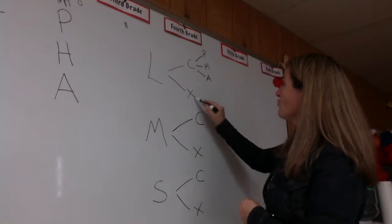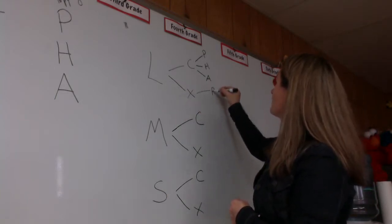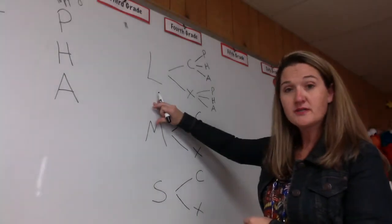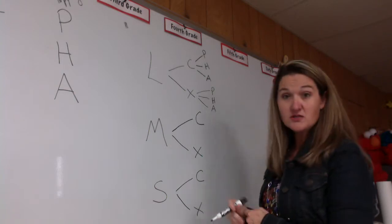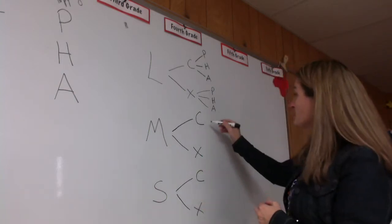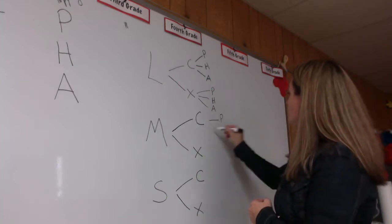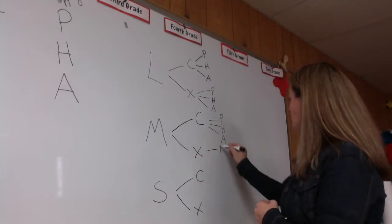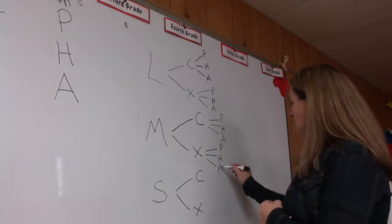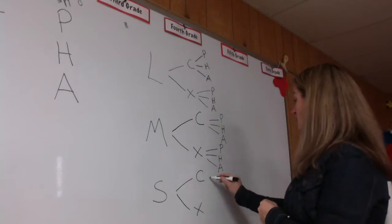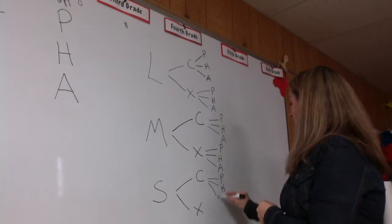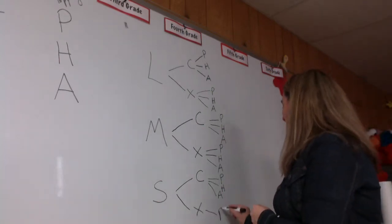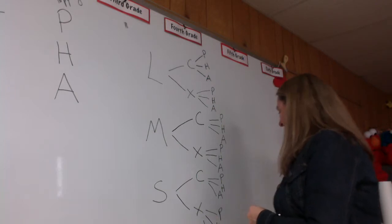It'll be the same thing with the extra cheese. I could have a large extra cheese with pepperoni, hamburger, and anchovies. So in terms of ordering a large pizza, I have six possible outcomes. We'll do the same thing with the medium — cheese with pepperoni, hamburger, anchovies — and medium extra cheese with pepperoni, hamburger, and anchovies. Then a small cheese with pepperoni, hamburger, and anchovies, and small extra cheese with pepperoni, hamburger, and anchovies.